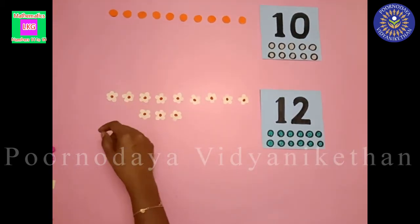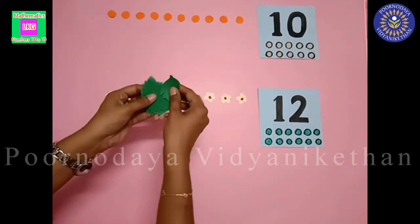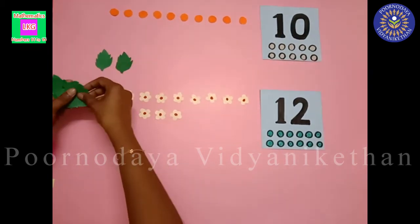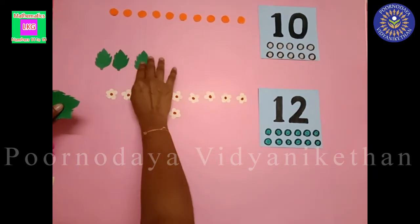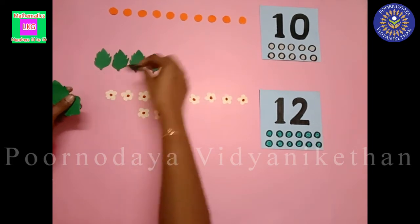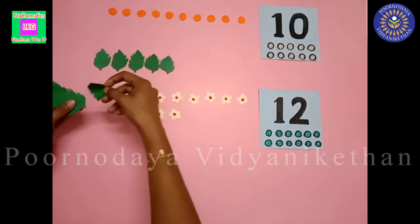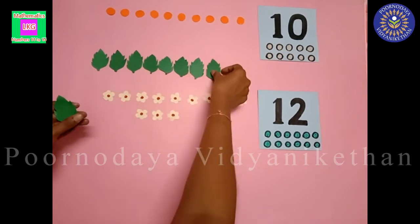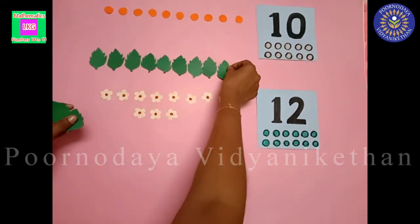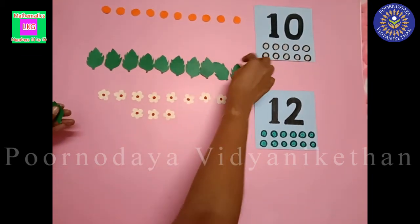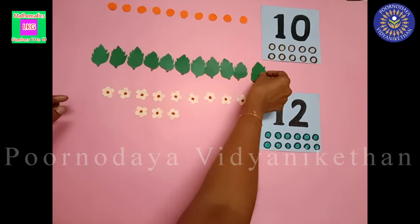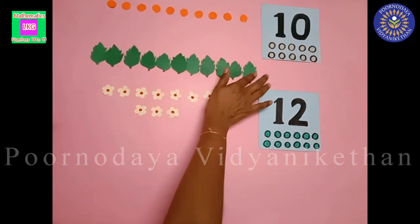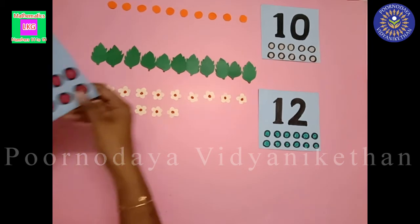Next I have some leaves with me. Let us count. 1, 2, 3, 4, 5, 6, 7, 8, 9, 10, 11. So here we have 11 leaves.